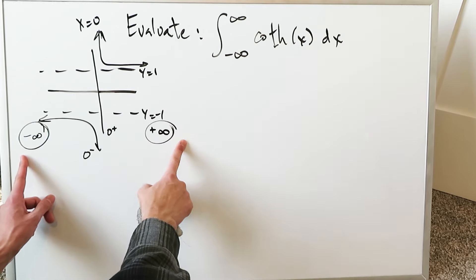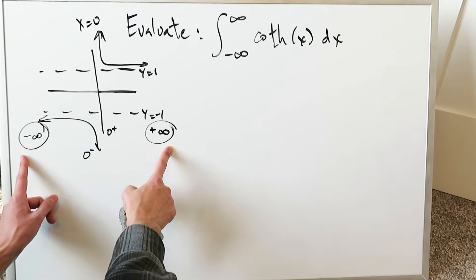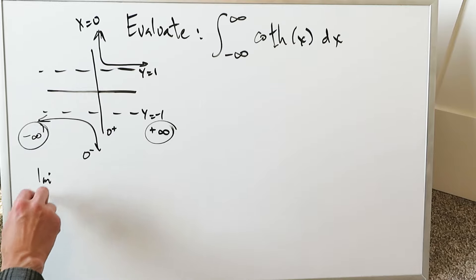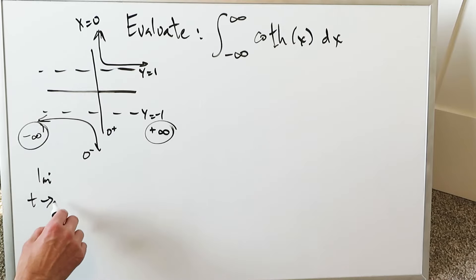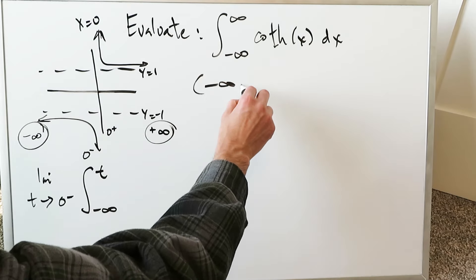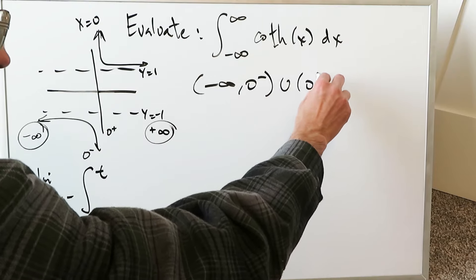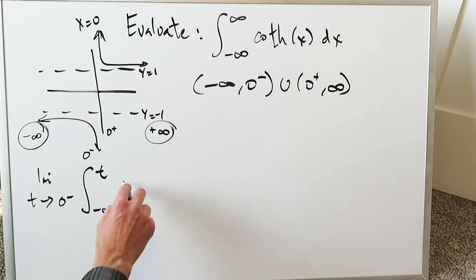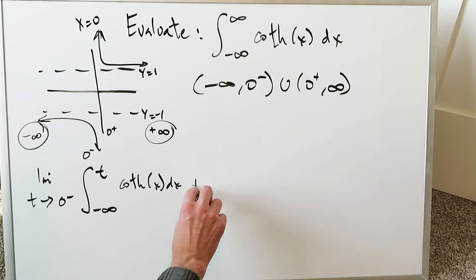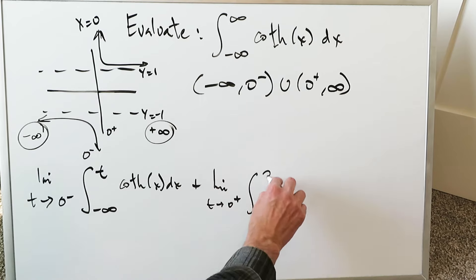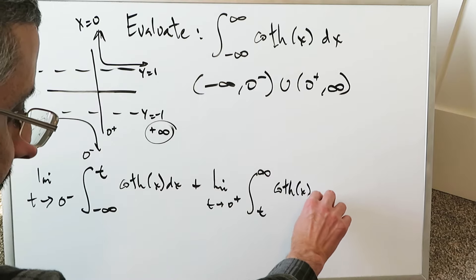The limits can be evaluated at the extremes of the infinite intervals, but at zero the limit does not exist, so the Type 2 improper integral must be kept in mind and it dominates the question. We write: limit as t → 0⁻ of ∫_{-∞}^{t} coth(x) dx, plus limit as t → 0⁺ of ∫_{t}^{+∞} coth(x) dx, breaking the integral at the discontinuity.